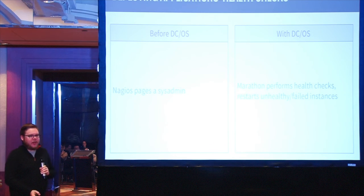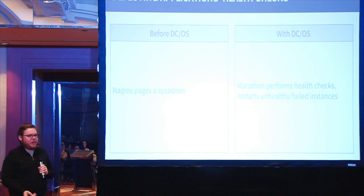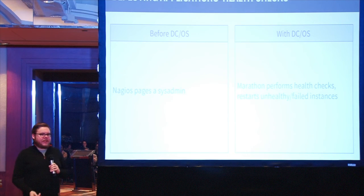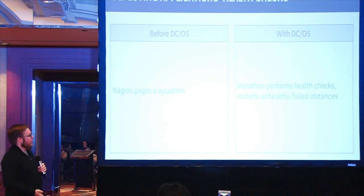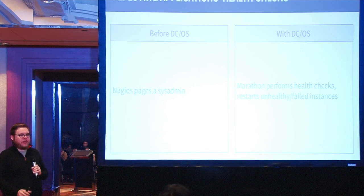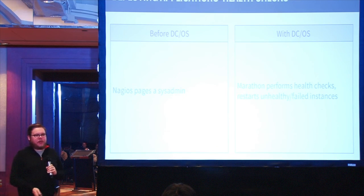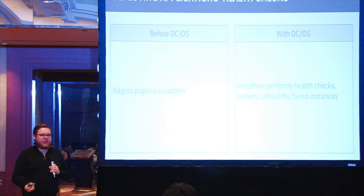Before automated health checks, Marathon might email or alert a systems administrator in the middle of the night when a service went down. Now Marathon performs these health checks for you — you can have it check specific URLs or make sure a specific port is listening and returning a valid response or error code. If any of those go unhealthy, Marathon restarts those instances automatically, so you won't get paged for a single instance failing.